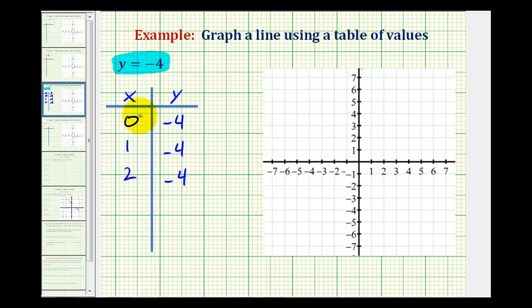Remember, every time we have an x and a corresponding y value, it represents a point on the given line. This tells us the line must contain the point where the x-coordinate is 0 and the y-coordinate is negative 4. When x equals 1 and y equals negative 4, the line contains the point (1, -4). This last row tells us the line contains the point (2, -4).